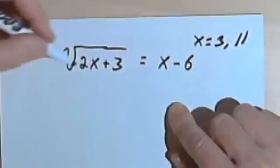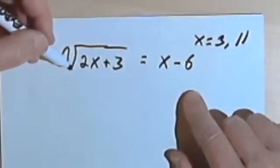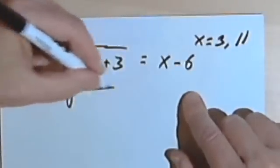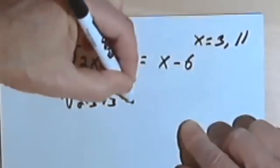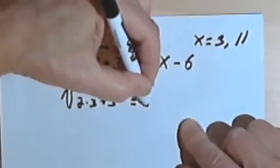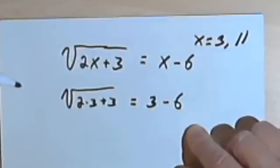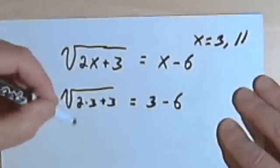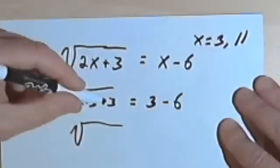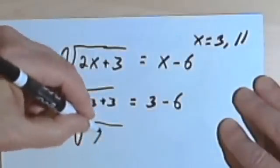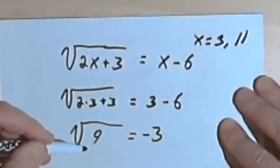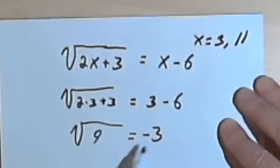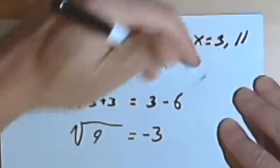Let's try the 3 first. Well, if x equals 3, then that means I'm going to have the square root of 2 times 3 plus 3. And I want to see if that equals 3 minus 6. So I've got the square root of 2 times 3 is 6 plus 3 is 9. And I want to see if that equals 3 minus 6, which is negative 3. You can see right now it's not going to work, because this is a negative number and the square root of 9 has to be a positive number. So we can't use the 3. 3 is no good.